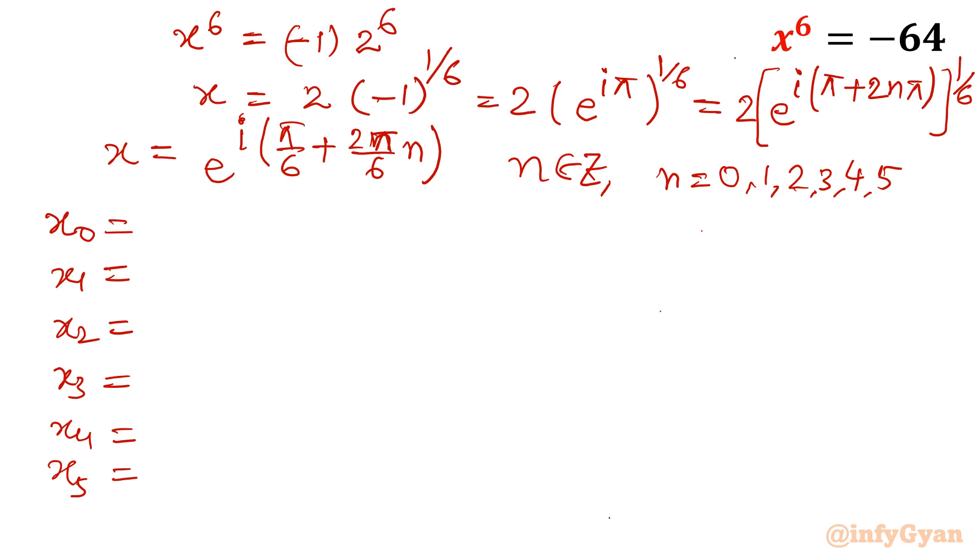x₀ means n = 0. Put n = 0, it will be 2e^(iπ/6). π/6 is √3/2 + i/2. cos 30° = cos π/6 = √3/2 + i sin 30° = sin π/6 = 1/2. If I will open the bracket then it will come out √3 + i.